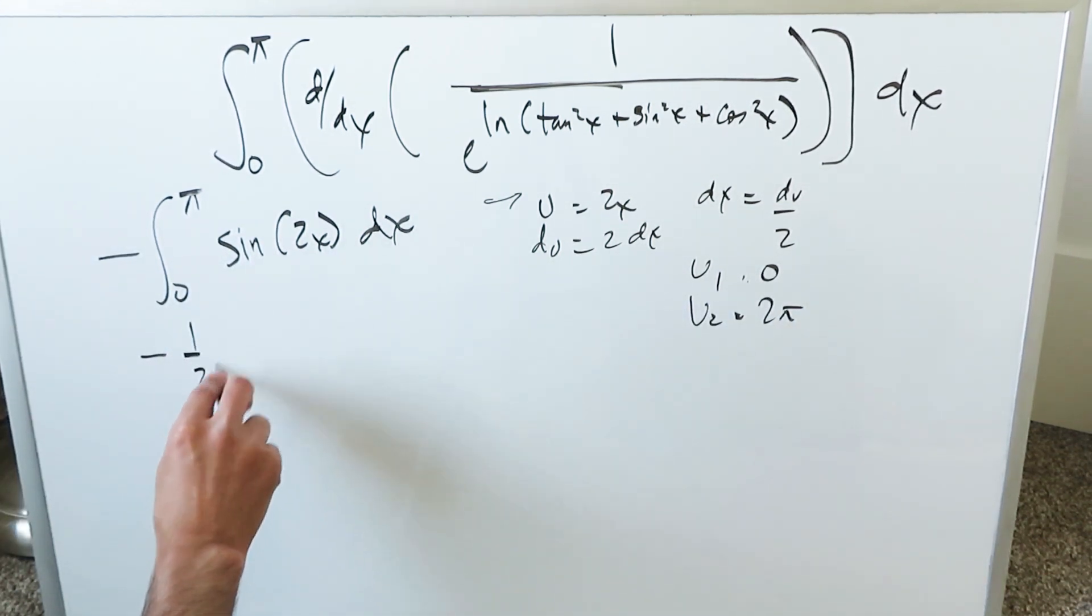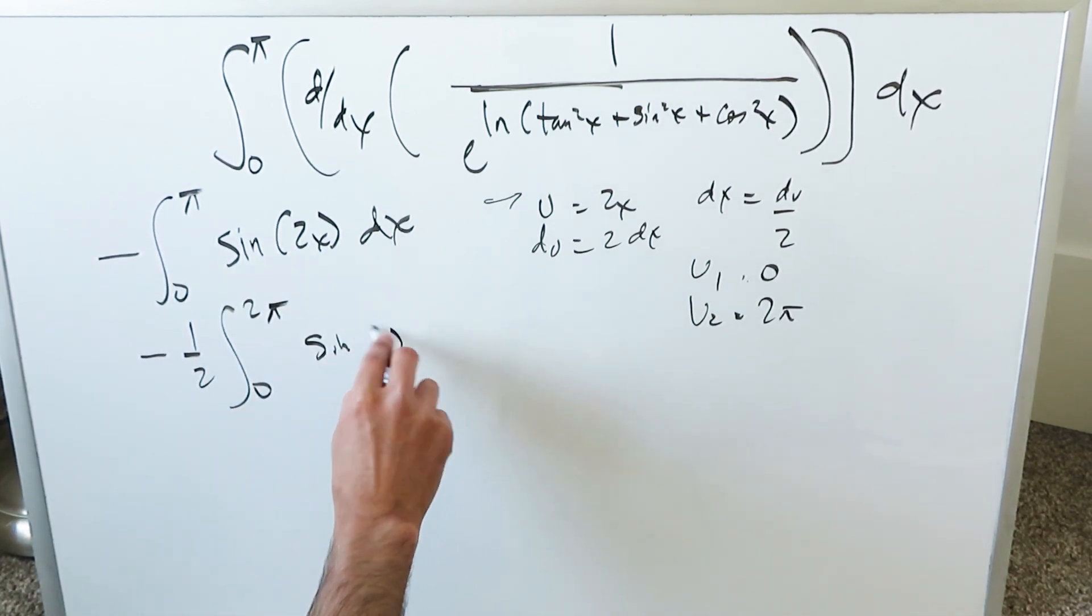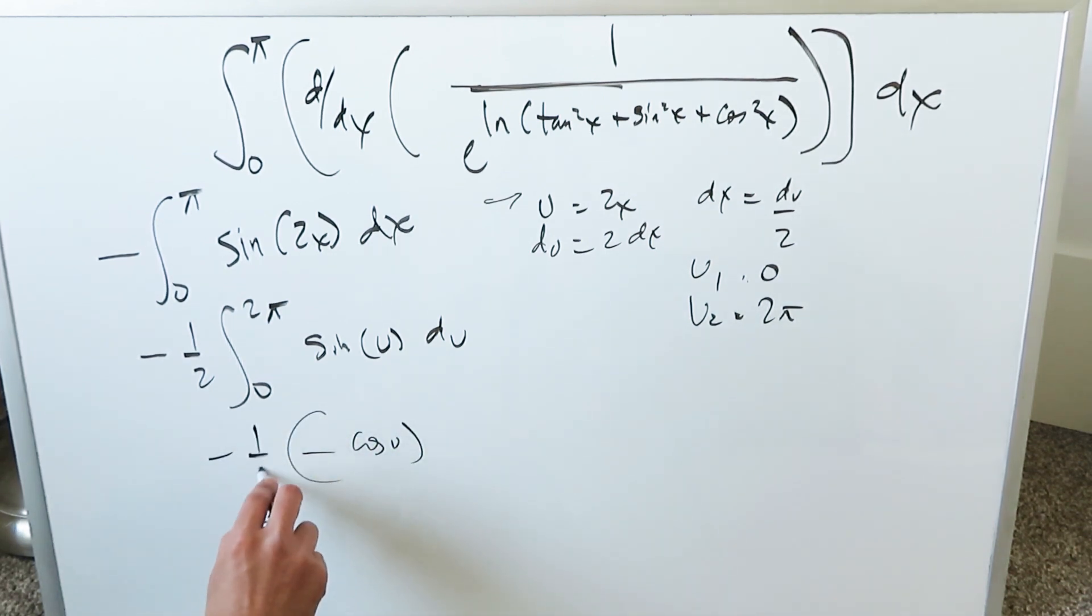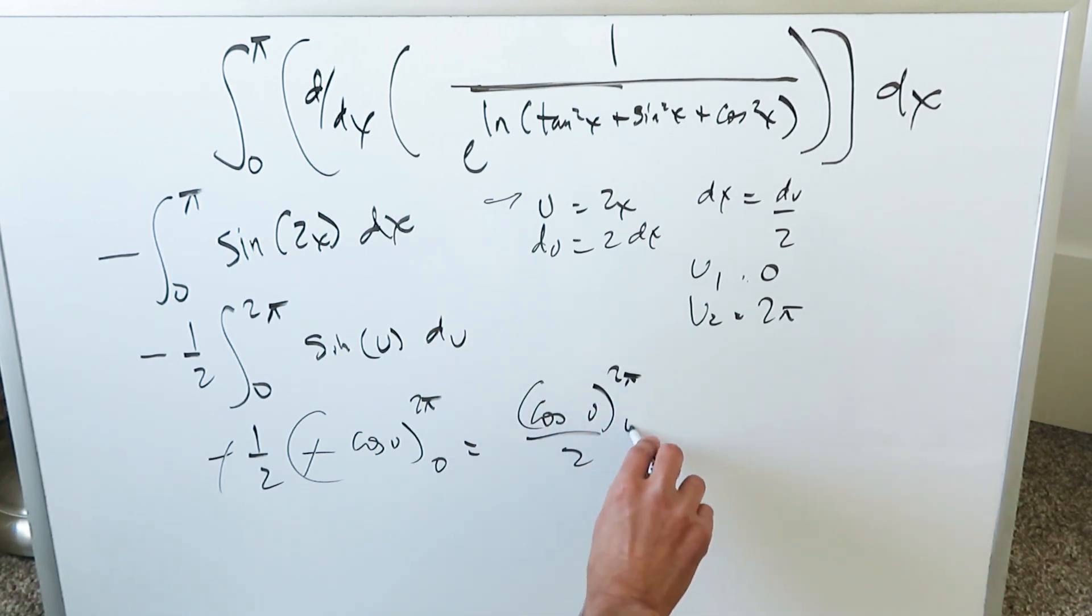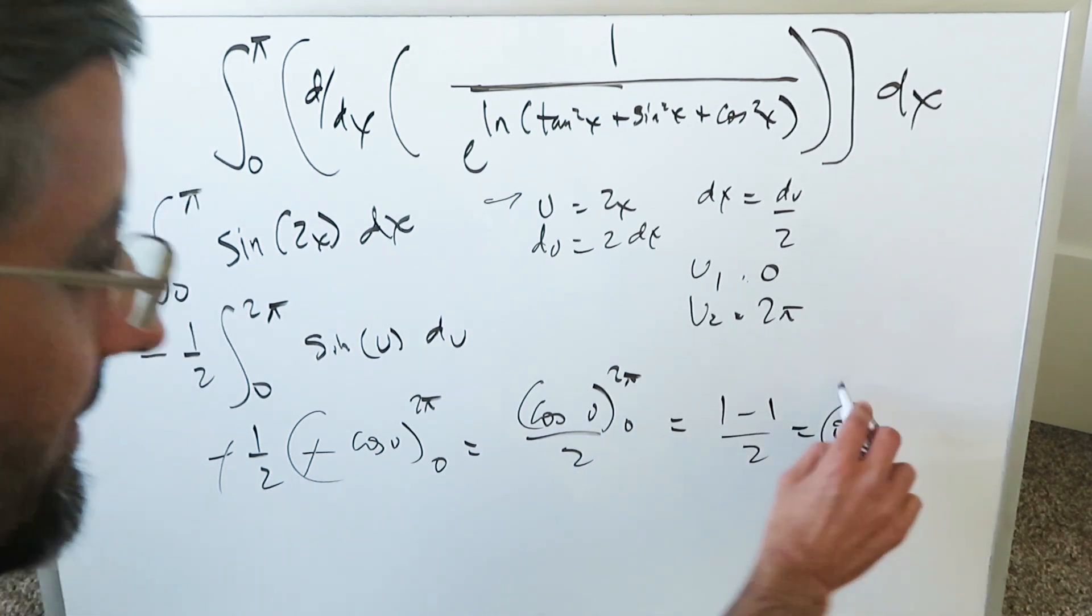What do we have? Minus 1 over 2, integral from 0 to 2 pi sine u du. The derivative is minus cosine u, and that's what you have with minus 1 over 2 sitting outside from 2 pi and 0. The minus minus cancel out. You have cosine u over 2, everything here from 2 pi and 0. Cosine of 2 pi is 1. Cosine of 0 is 1. And your end result here is 0.